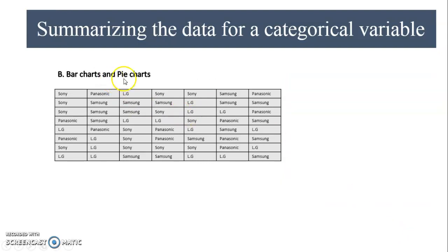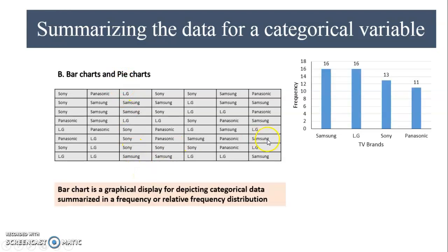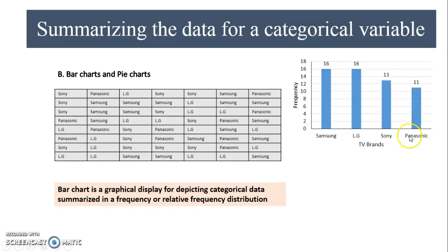The other tools are bar charts and pie charts. A bar chart is a graphical display for depicting categorical data summarized in a frequency or relative frequency distribution. I have made a bar chart based on the frequency distribution: Samsung repeated 16 times, LG 16 times, Sony 13, and Panasonic 11. This is the graphical representation, whereas the frequency distribution is a tabular representation.